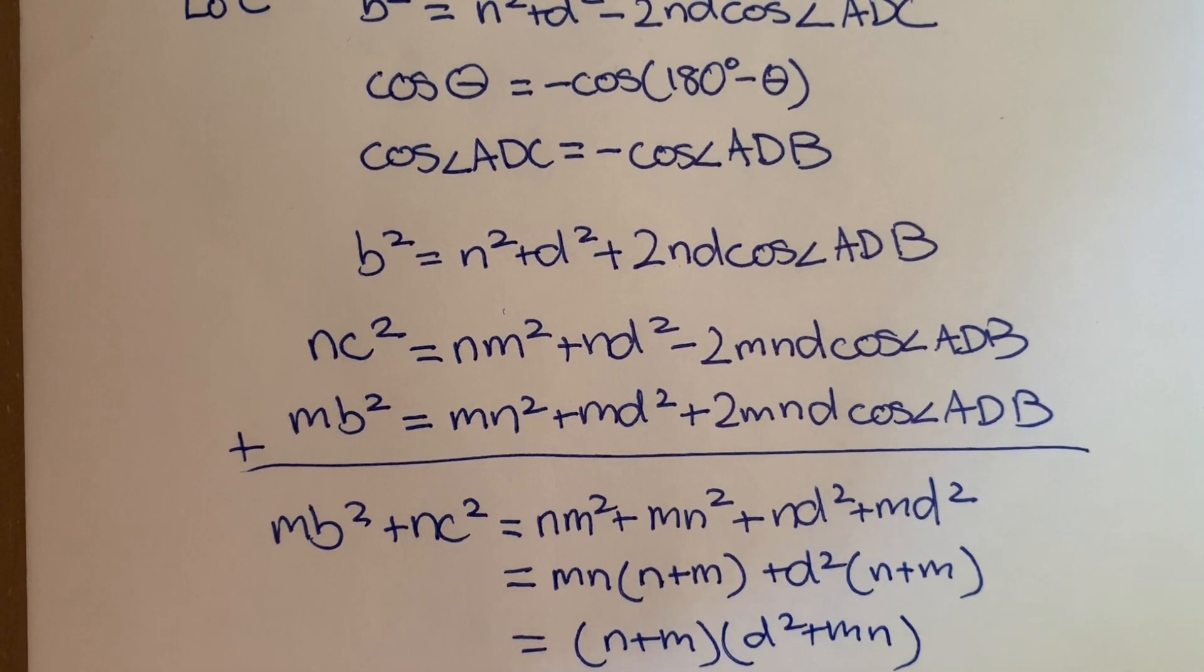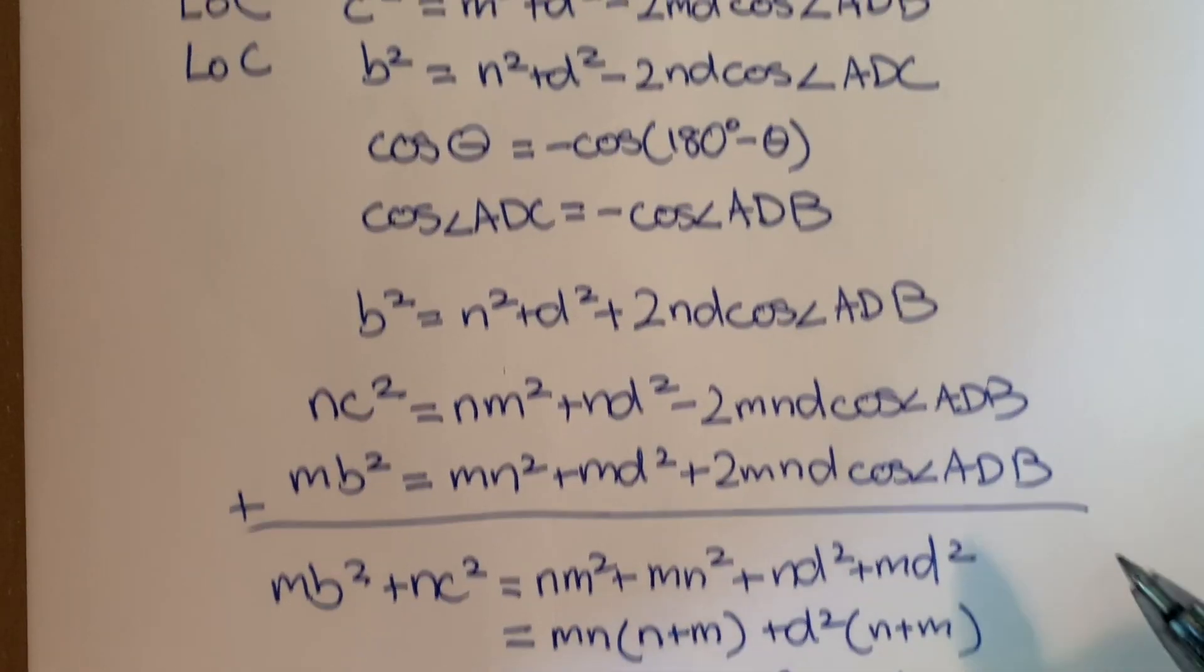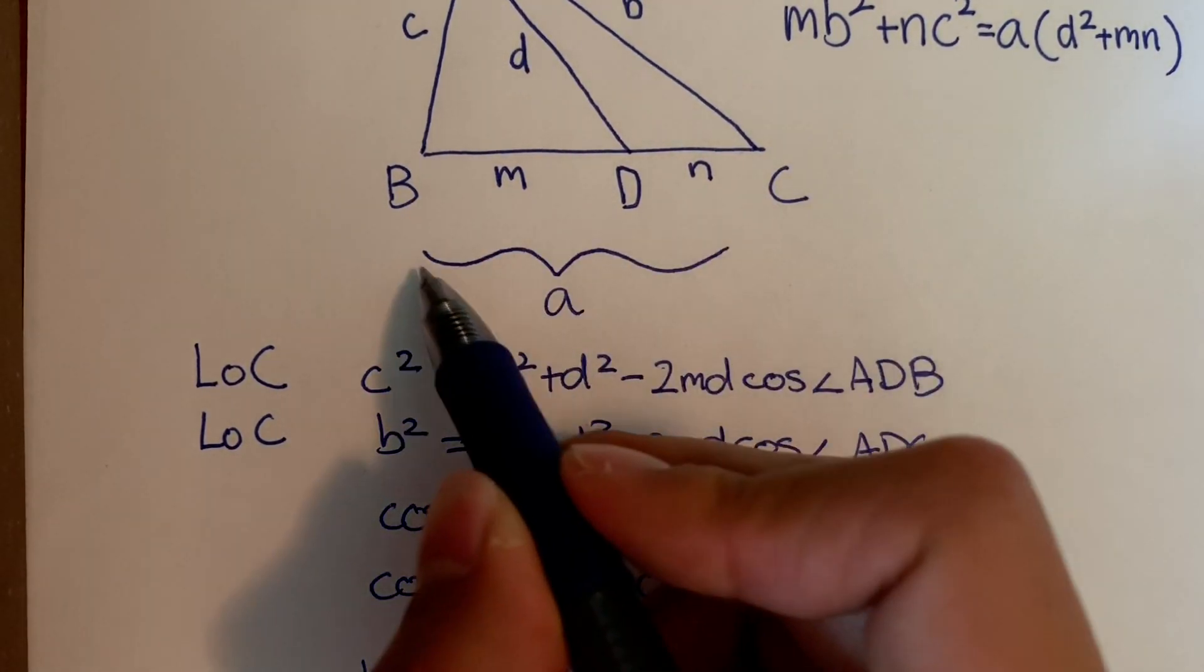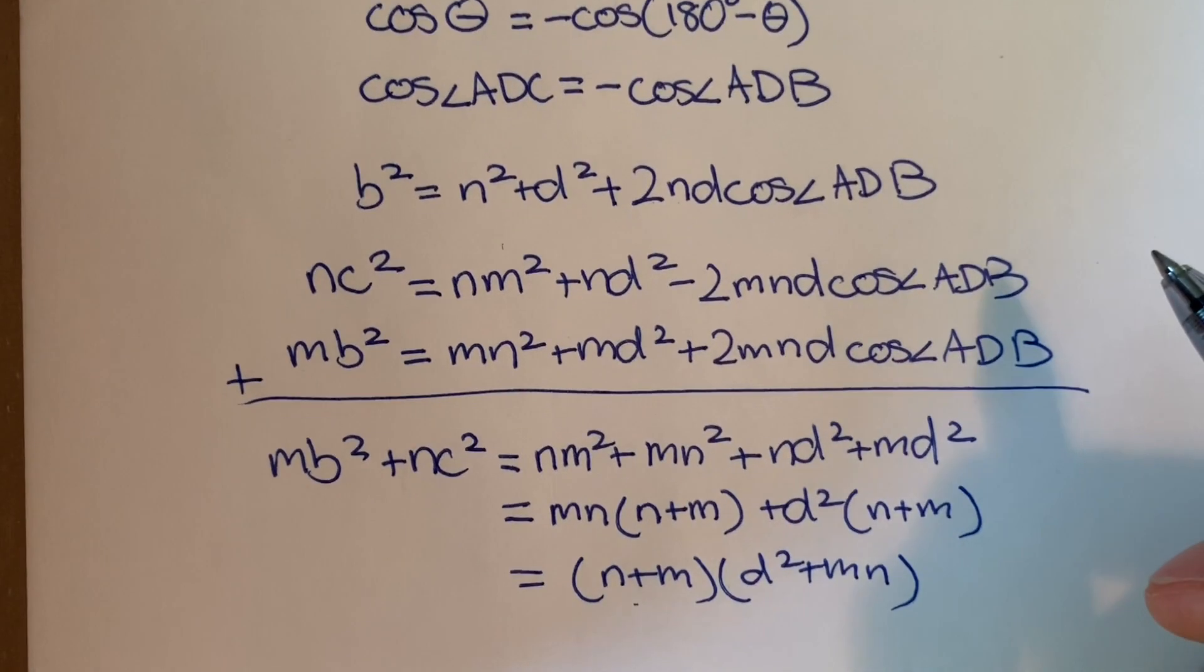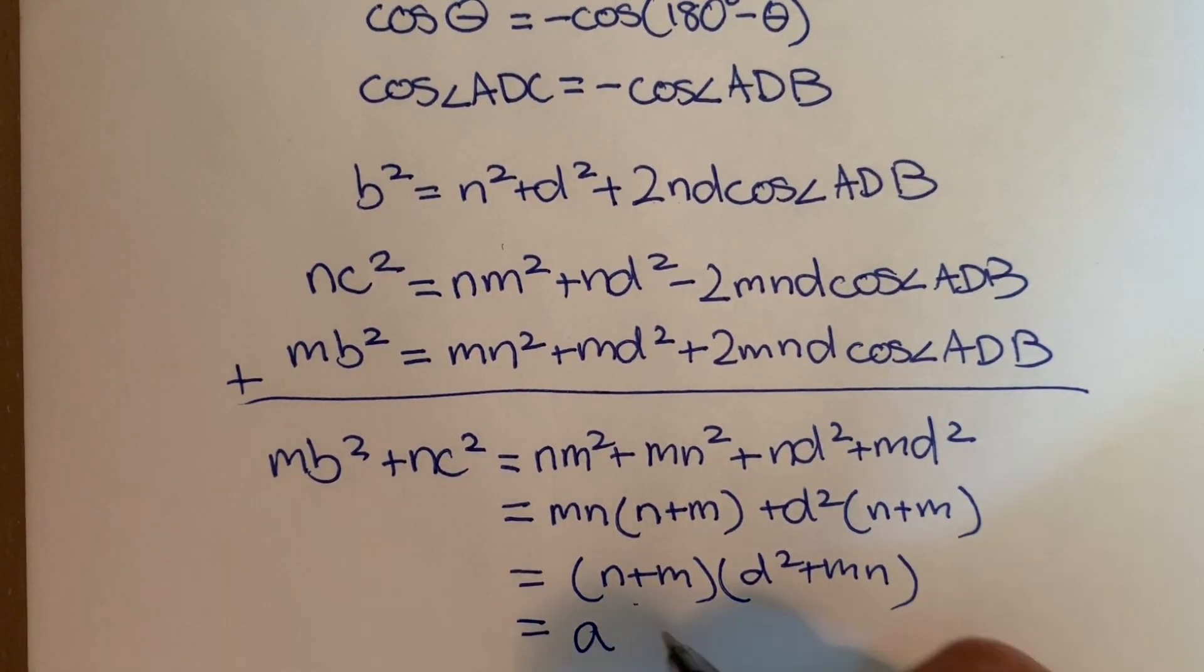Actually, going back to our diagram here, we see that M plus N is equal to A. So substituting that in, we're left with A times D squared plus MN.